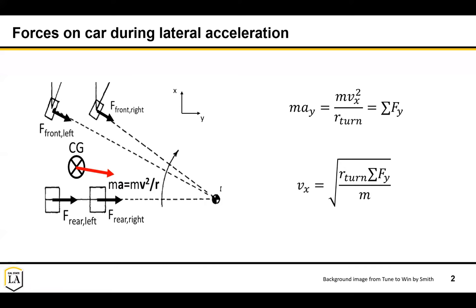We can begin to see that these forces are really what limit how fast you can take a high-speed turn. The larger the radius of the turn, the faster you can go, and the larger the mass, the slower you can go. This mass will figure into the lateral force, as we'll see next.